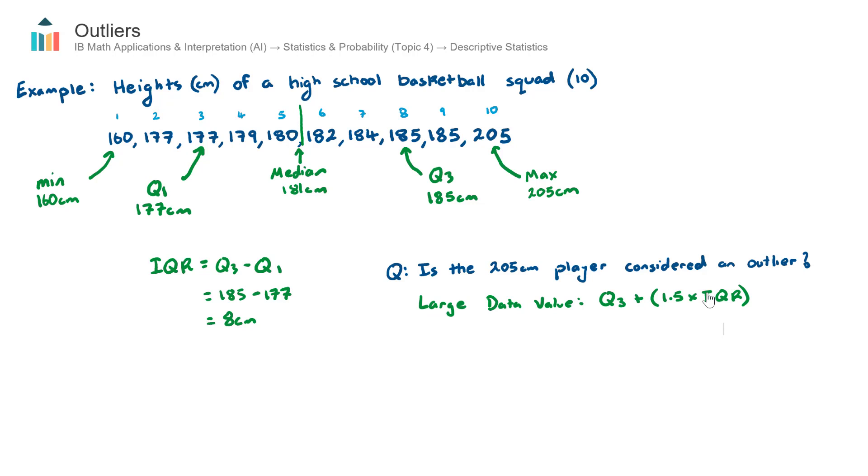So if the data value is actually smaller than this test or within this range here it is not considered an outlier. If the data value is bigger than this it will be considered an outlier. So let's go and test it on this dataset here.